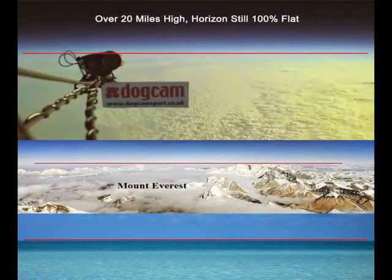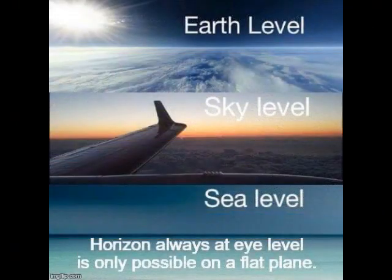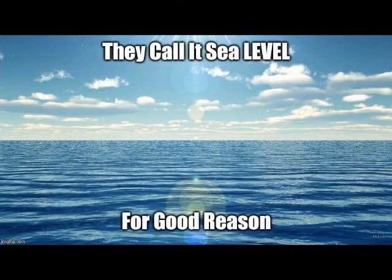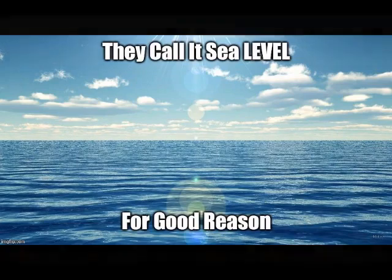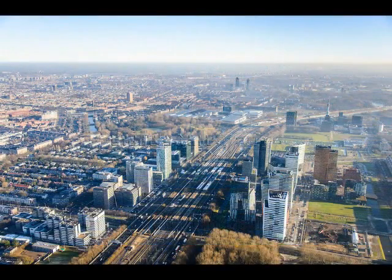Whether at sea level, the top of Mount Everest, or flying a hundred thousand feet in the air, the always horizontal horizon line always rises up to meet the eye level of the observer and remains perfectly flat. You can test for yourself on a beach or hilltop, in a large field or desert, aboard a hot air balloon or helicopter — you will see the panoramic horizon ascend with you and remain completely level all around.